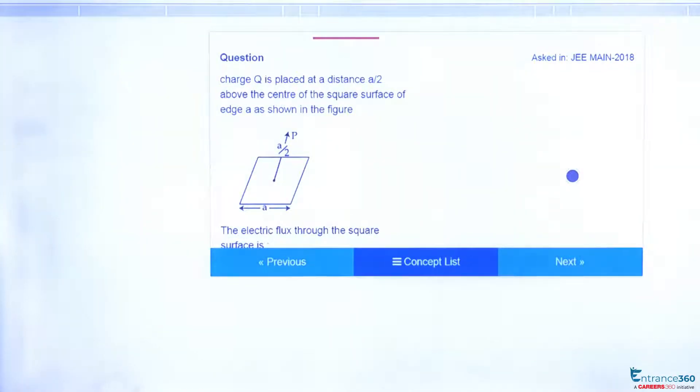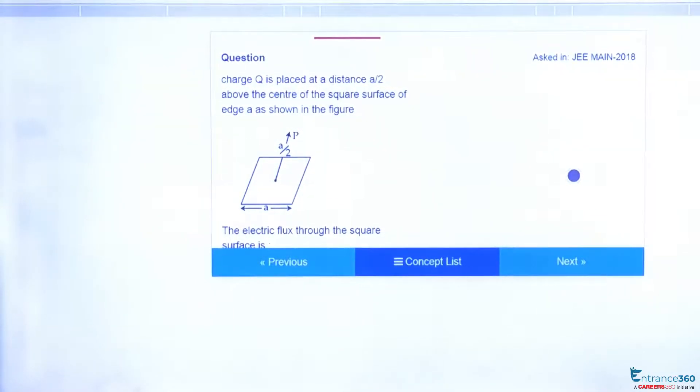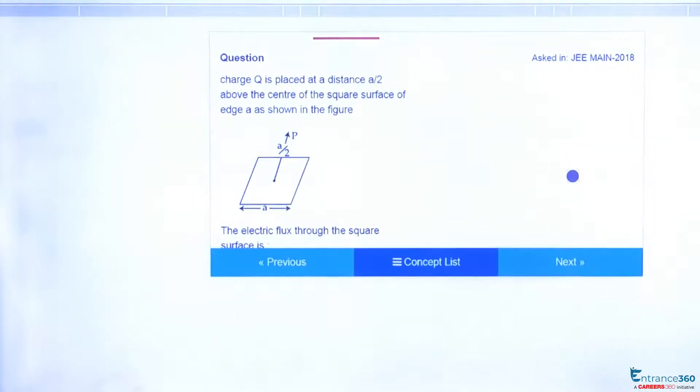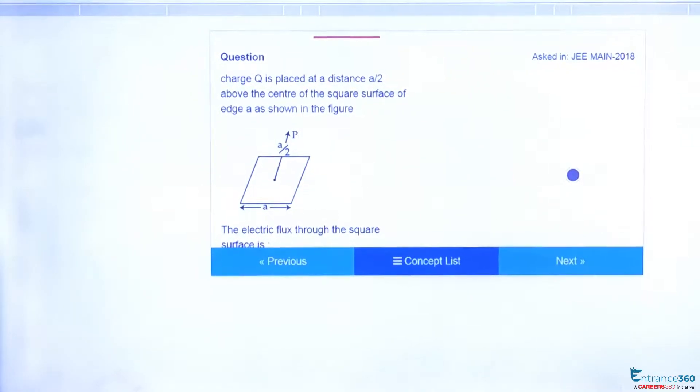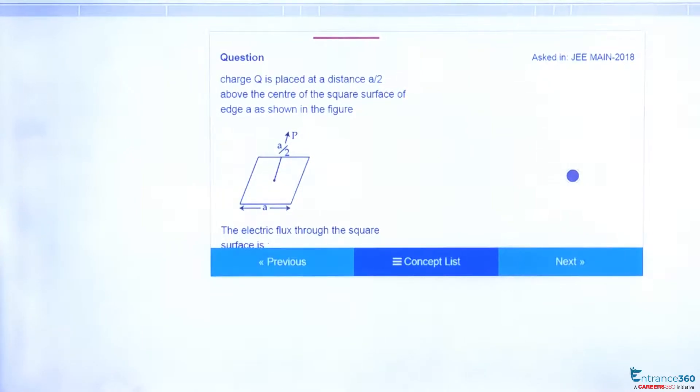Hello students, let's discuss a question from the chapter Electrostatics which was asked in JEE Main 2018. The question is: a charge q is placed at a distance a/2 above a square surface of edge a.